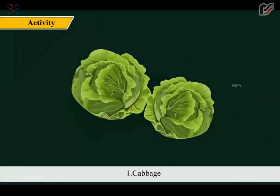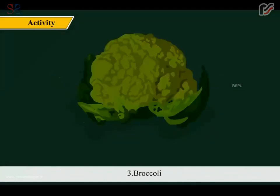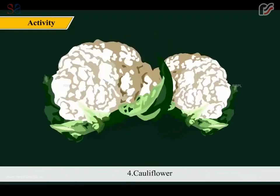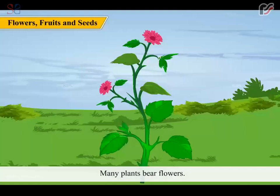Let's recall and list down the names of 5 leafy plants that are edible: 1. Cabbage, 2. Spinach, 3. Broccoli, 4. Cauliflower, 5. Radish. Many plants bear flowers.